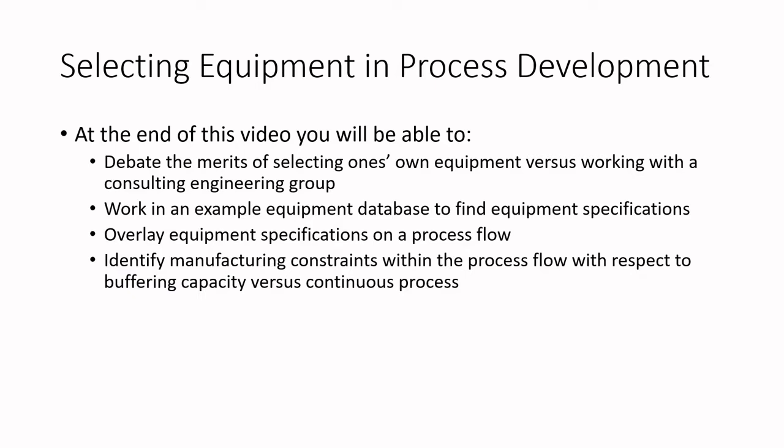You'll be working with an example equipment database to find equipment specifications, overlay those specifications onto a process flow, and identify manufacturing constraints within the process flow with respect to buffering capacity and considering continuous processes. Think about making bread — your equipment has to meet the speed of making that product. Many of the tools out there for selecting equipment and developing production scheduling are designed for generic manufacturing systems.